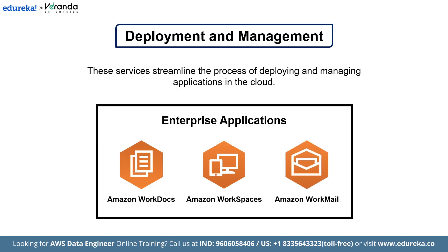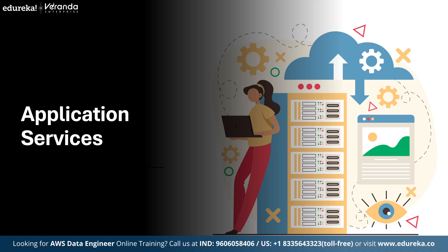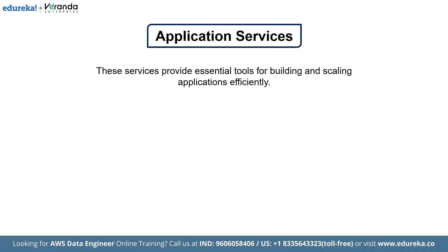Next, Amazon WorkMail. Amazon WorkMail is a secure, managed business email and calendar service with support for existing desktop and mobile email clients. Earlier, we touched on application services as part of deployment and management — services that support the operational side of running applications like messaging, transmitting, transcoding and email delivery. Now in this section, when we say application services, we are shifting our focus to the tools and platforms used for actually building, running and scaling modern applications. These are the core components developers and architects use directly in application development.